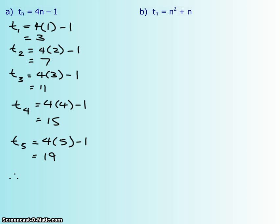And then, term 5 is 19. Therefore, the first five terms in your sequence are 3, 7, 11, 15, and 19. And we're just going to put three dots. That means it goes on and on forever.